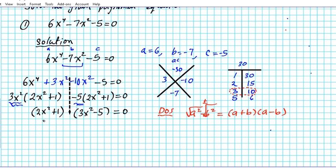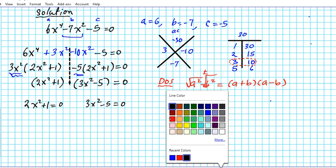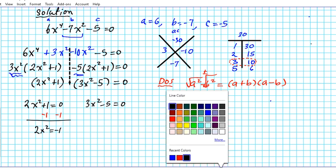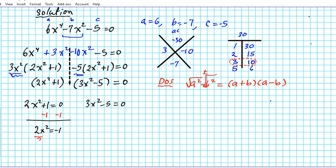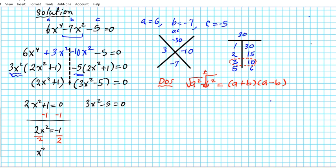So we are now going to use the zero product property and set both factors equal to zero. Alright, so let's go ahead and solve it. The first one we are going to subtract 1 to get the x^2 isolated. So subtract 1, we have 2x^2 = -1. Divide both sides by 2, we have x^2 = -1/2.